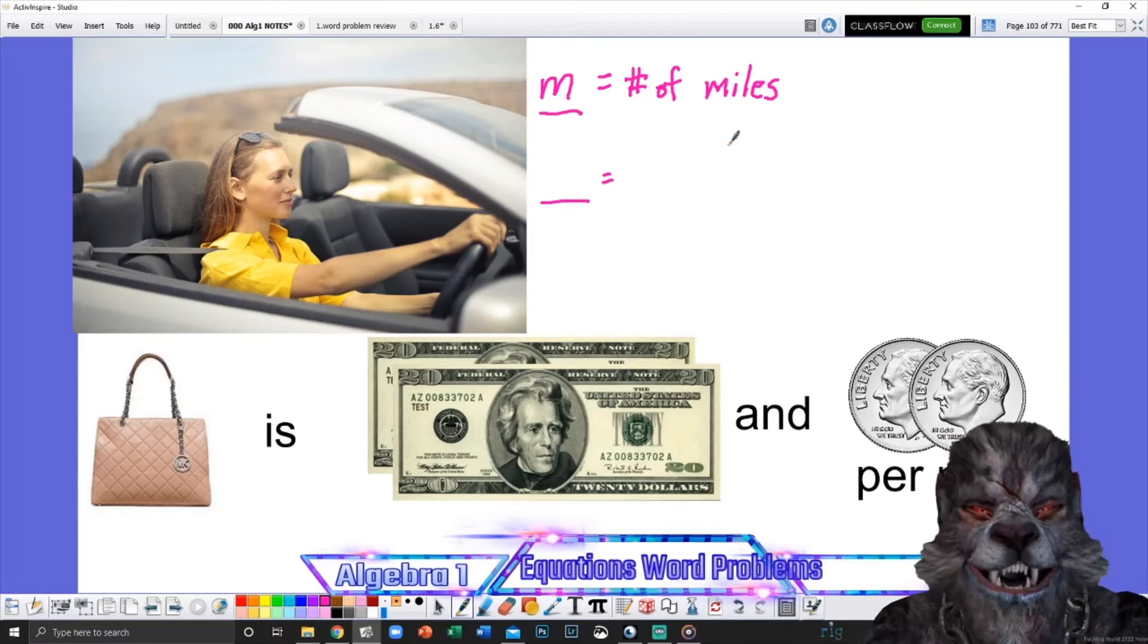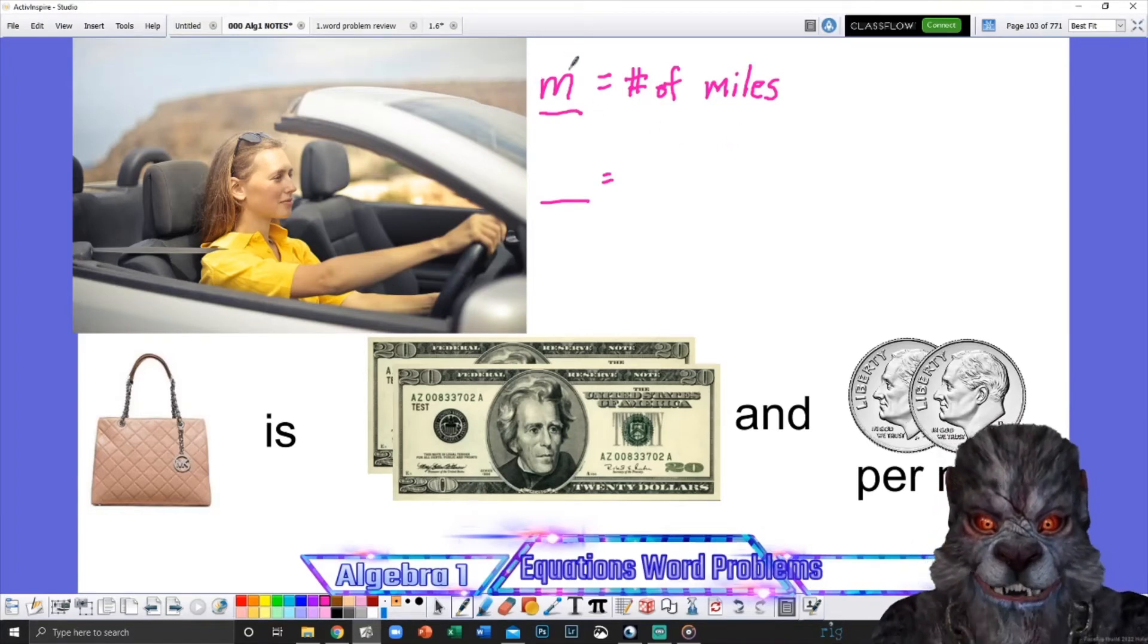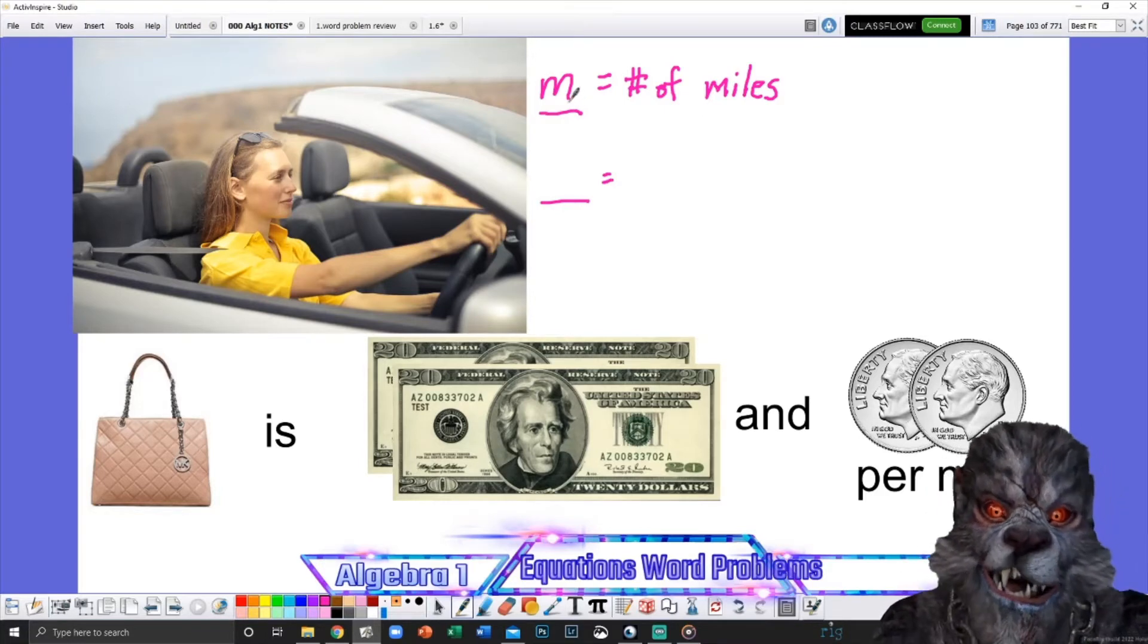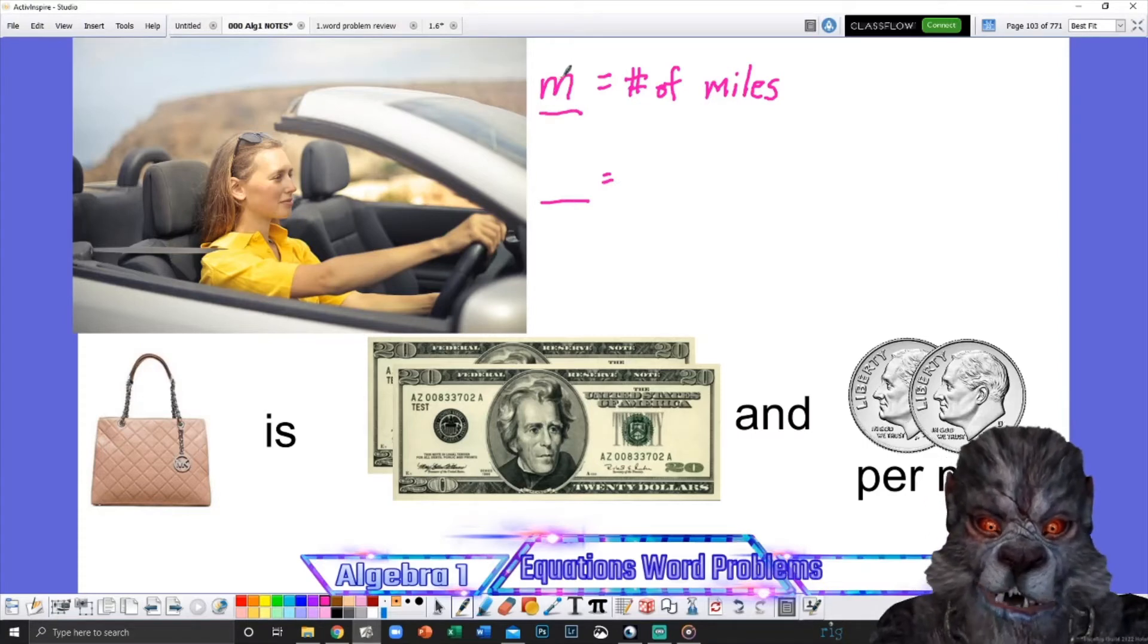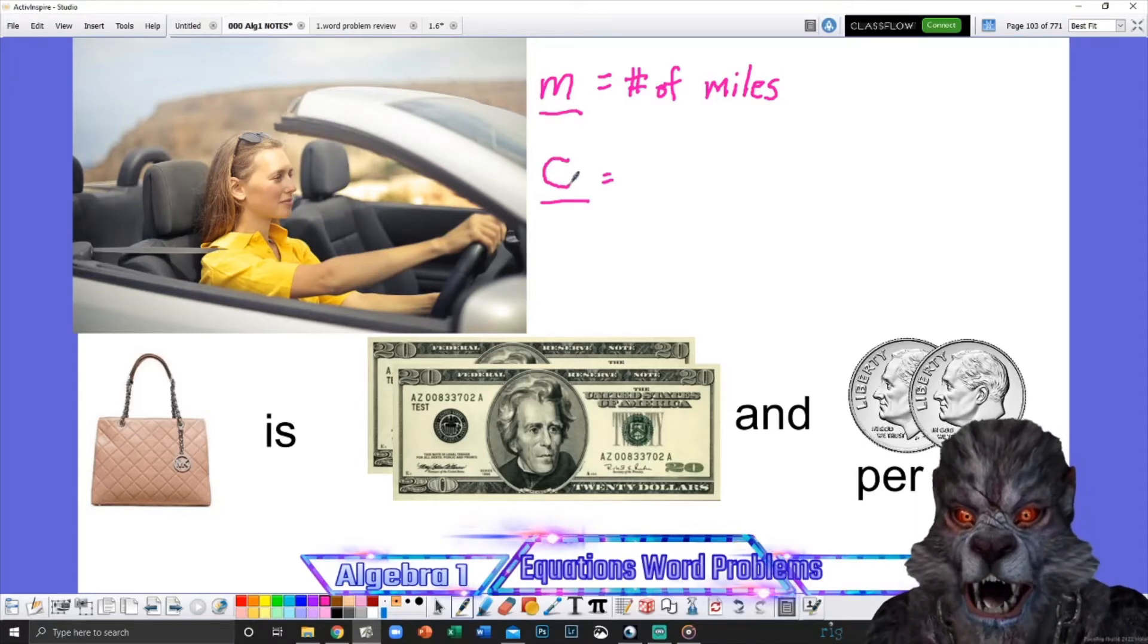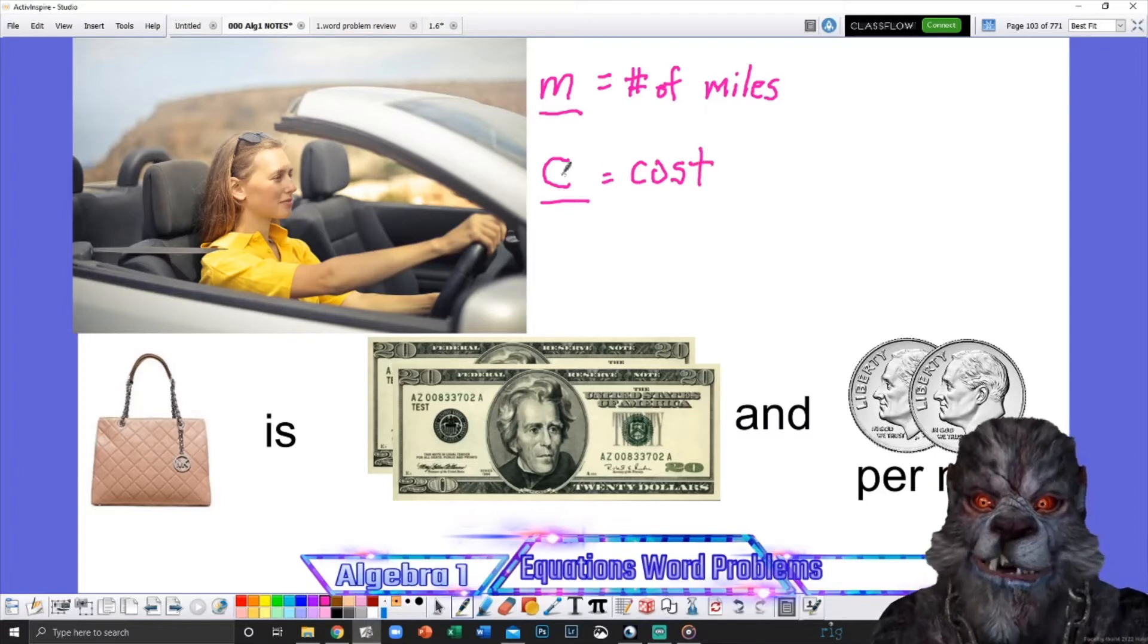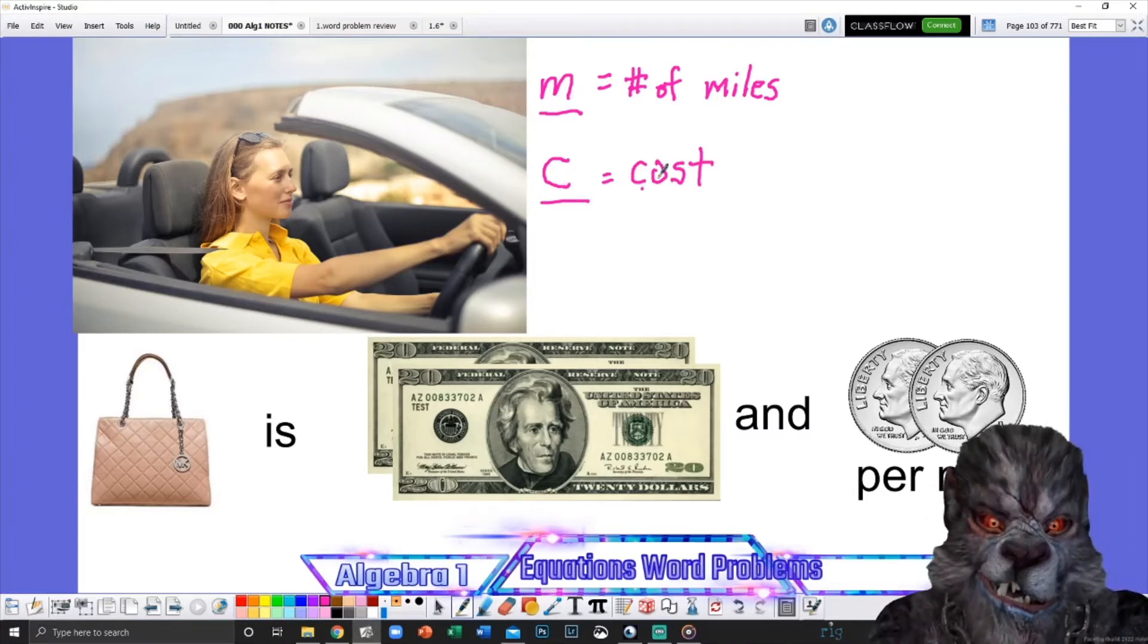In this case, you see the word per right up there next to the word mile. Usually the word after per or each tells you one of the variables. Mile. We don't know how many miles Maria went, so I'm going to let m equal miles, number of miles. Now I'm a little bit old, so please understand that old people think that means number. You guys think that this has something to do with Twitter. It doesn't. This means number of miles. Now there's something else that you don't know.